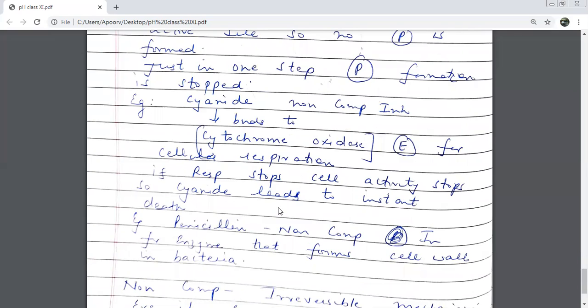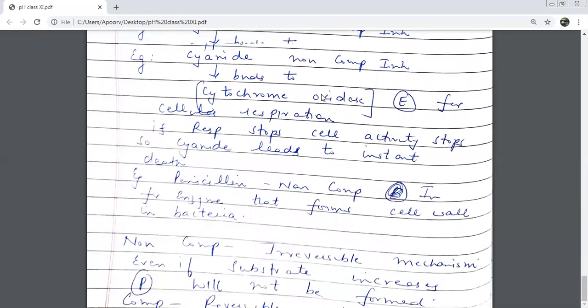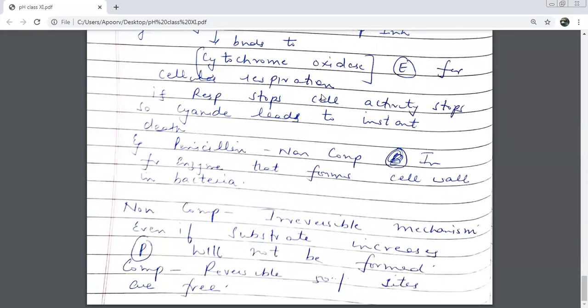Similarly, there is one more example of penicillin. There also we have an inhibitor which forms cell wall in bacteria. But it is a little bit complex. You do not go into that. You just understand this cyanide. It is easy and it is interesting also for you.